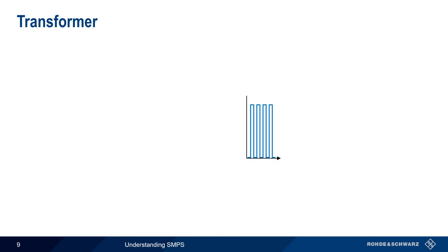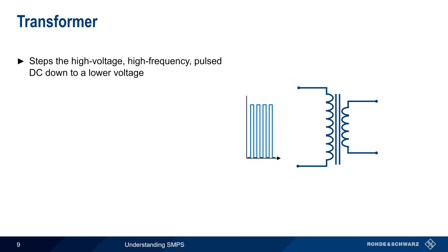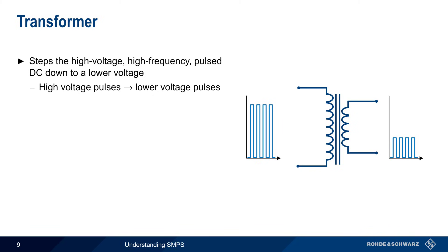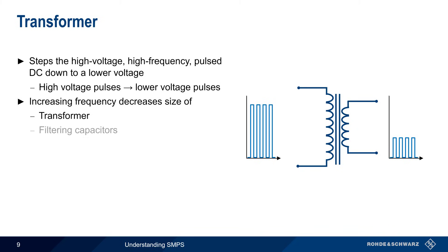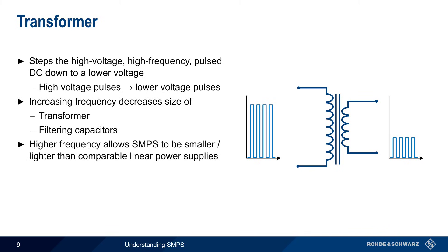The high frequency, high voltage output of the switcher is then passed to a transformer, which steps these high voltage pulses down to lower voltage pulses. Recall that higher frequencies decrease both the size of the transformer as well as the size of the filtering capacitors that will be needed in the next stage. And this is what allows switching mode power supplies to be smaller and lighter than comparable linear power supplies.